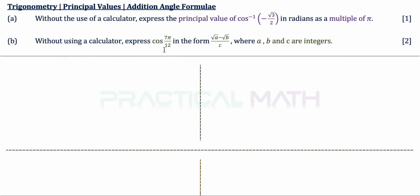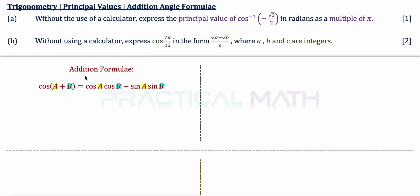In part B, we express cosine 7π/12 in the form (root A minus root B) over C. The angle 7π/12 is made up of two special angles added together. Before solving, we revise the addition angle formula for cosine: cosine(A + B) equals cos A cos B minus sin A sin B.